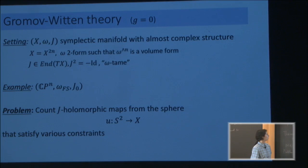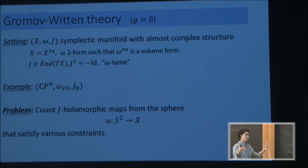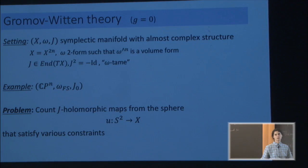We want holomorphic maps that satisfy various constraints. By constraints I mean that you want to count something. The objects that you count should hopefully form some sort of a zero-dimensional space. In order to do that, you may want to impose constraints on the maps — for example, you want to count only such maps whose image intersects a fixed divisor in the range, or something like that.